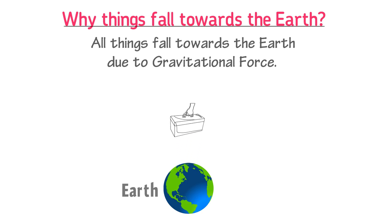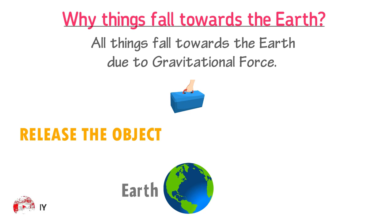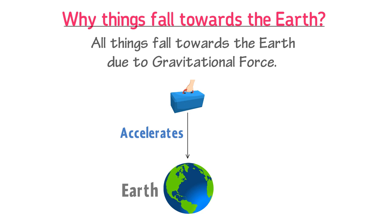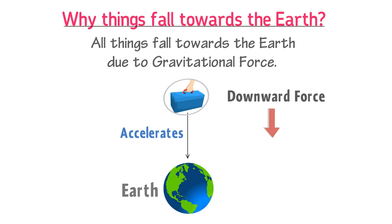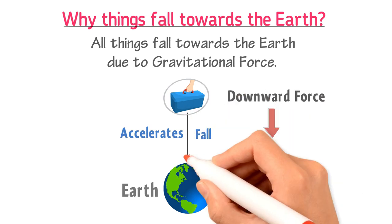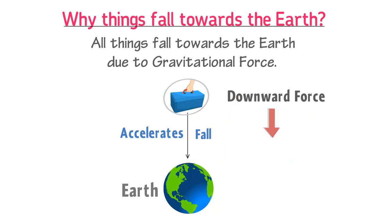When you lift up an object above the earth's surface and then release it at a particular height, the object accelerates and falls towards the center of the earth. In physics, we explain this as the object experiencing a downward force at that height. This downward force of the earth on the object is known as gravitational force.